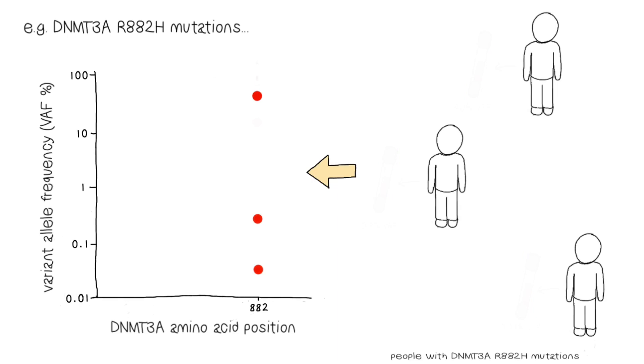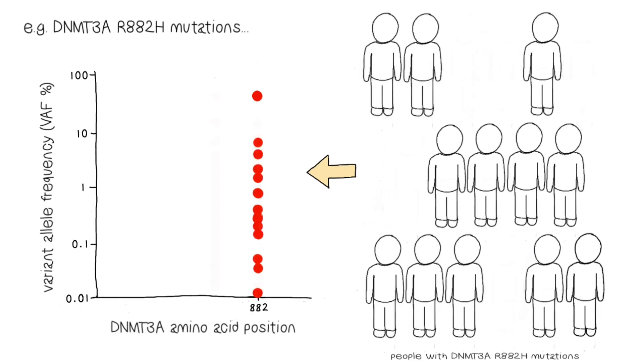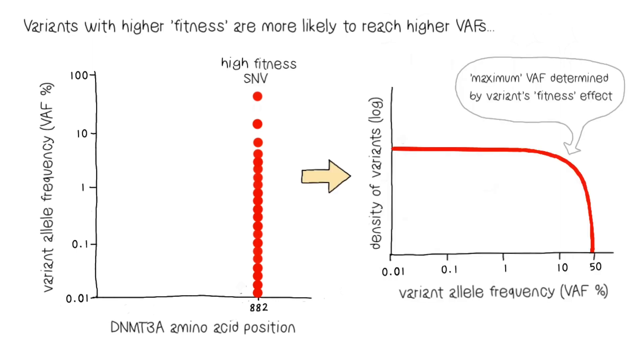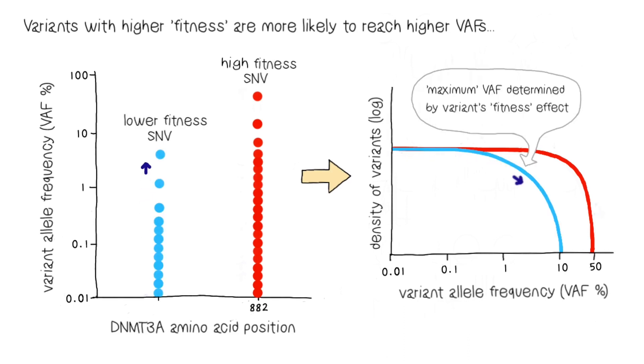What we found, however, is that by looking at the spectrum of variant allele frequencies across large numbers of individuals, and combining this with evolutionary theory, it is possible to quantify the growth potential, or fitness effect, for specific variants at single nucleotide resolution, allowing us to determine which specific variants are potentially the most pathogenic.